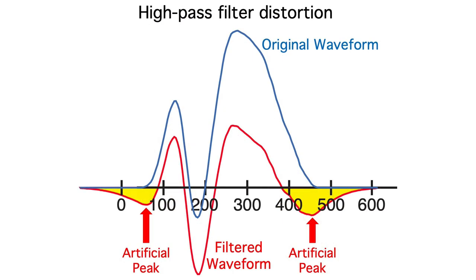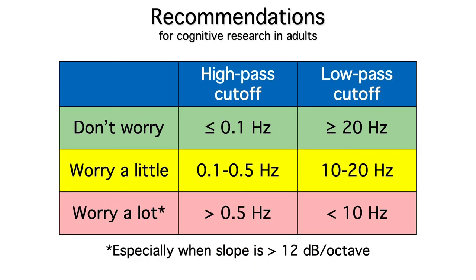Now you're probably feeling a little nervous about filters, but they're actually essential. You just need to make sure that the data aren't over-filtered. How do you know if the filtering is too extreme? You can use this handy-dandy little table. It tells you what values are okay, what values are potentially problematic, and what values might really distort the data. Keep in mind that these values are for cognitive and affective research with adults. Different filter settings may be needed to look at early sensory responses or recordings of infants and young children.